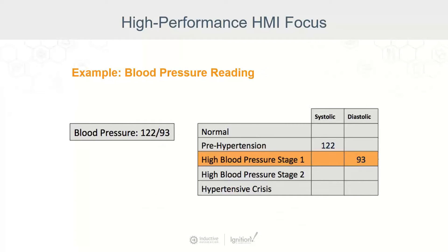Another example is a blood pressure reading. A lot of people would not know, looking at the one on the left, whether that is a good or bad result. The one on the right is more informative — it shows you that the reading is high compared to normal and where it falls on the spectrum of blood pressure readings. It shows us the current condition in relation to what it should be. So additional context is really important when looking at these interfaces.